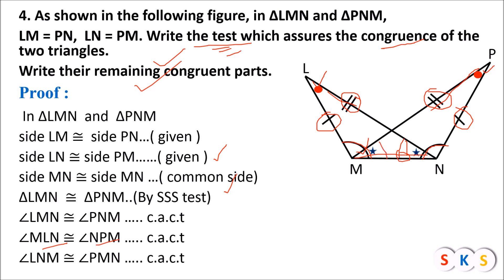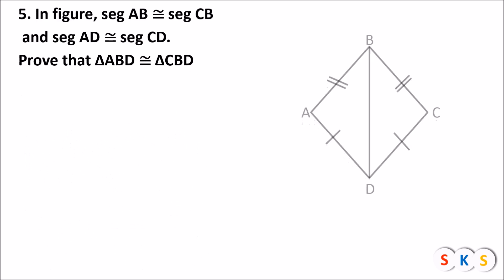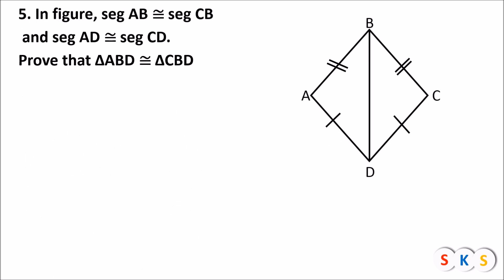In question number five, seg AB is congruent to seg CB, and seg AD is congruent to seg CD. Prove that triangle ABD is congruent to triangle CBD. Let's see the proof.